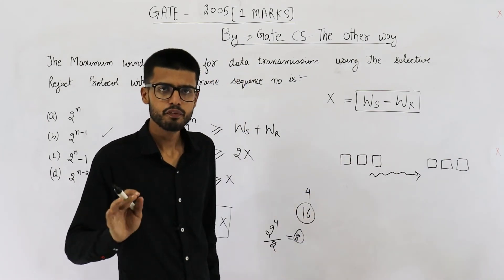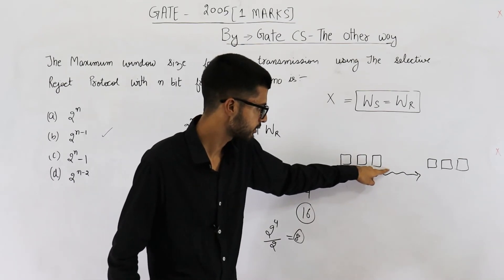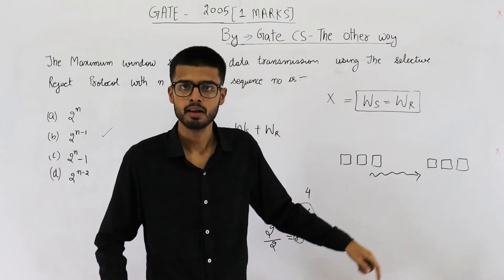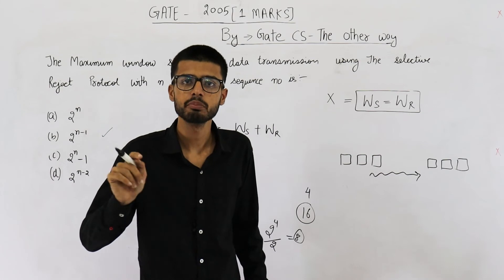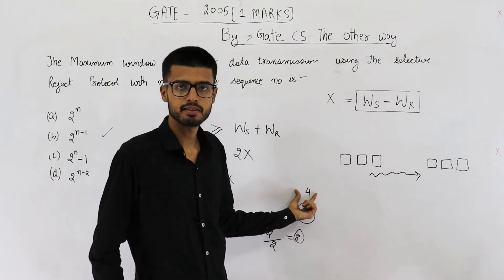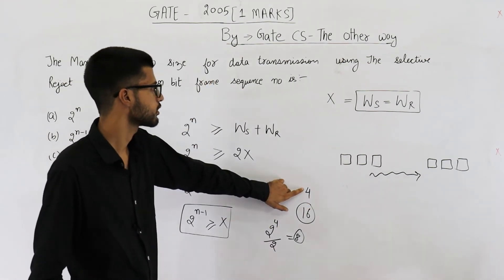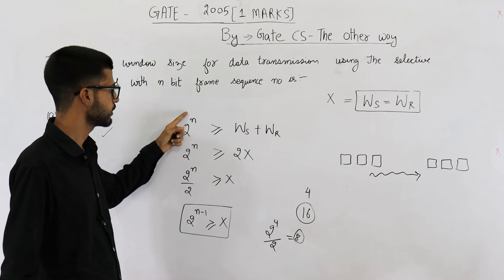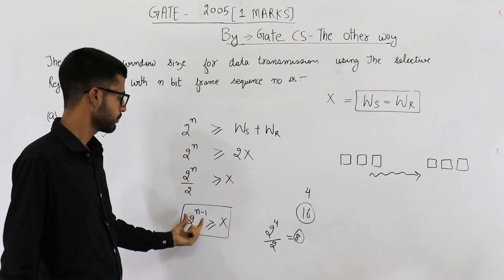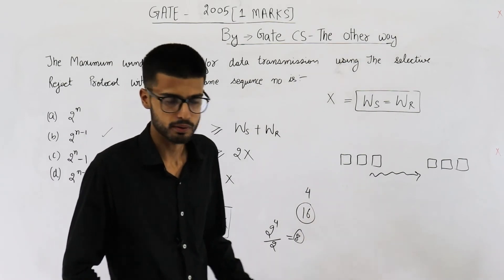If you want to have bigger window that means you want 9 window size, 9 on this side and 9 on that side. In that case you will require minimum of 18 sequence numbers but we can have only 16 because 4 bits are there. So if n is 4 and if n is kept as it is, maximum window size is this in selective repeat protocol.